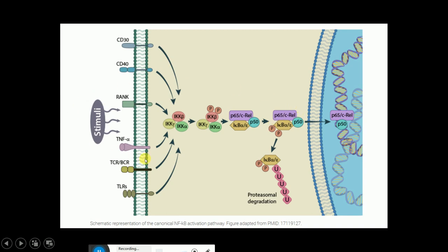To recapitulate the canonical NF-κB pathway: different stimuli bind to their corresponding receptors on the cell membrane, which causes activation of the IKK complex. This activation is followed by phosphorylation of IKKβ of the IKK complex. The phosphorylated IKKβ then phosphorylates IKBα of the complex. When IKBα/ε is phosphorylated, it is followed by ubiquitination of IKBα/ε, and when ubiquitinated it is degraded by the proteasome.